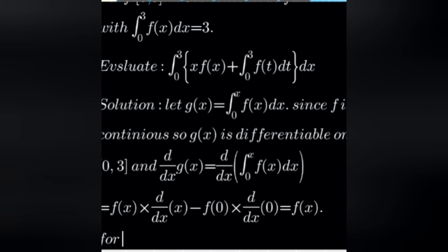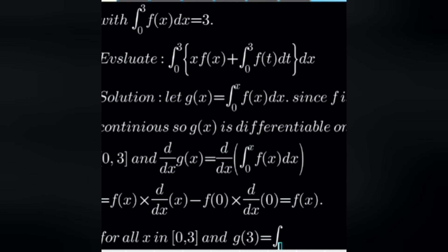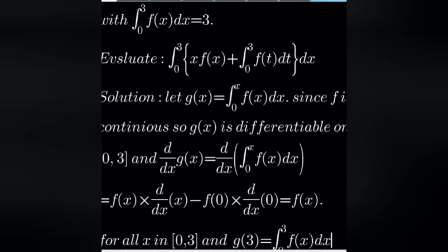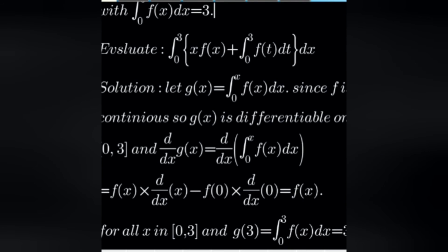For all x in the closed interval [0, 3]. And g(3) is equal to the integral from 0 to 3 of f(x) dx, which is given to be equal to 3. So from here, g(3) is equal to 3.